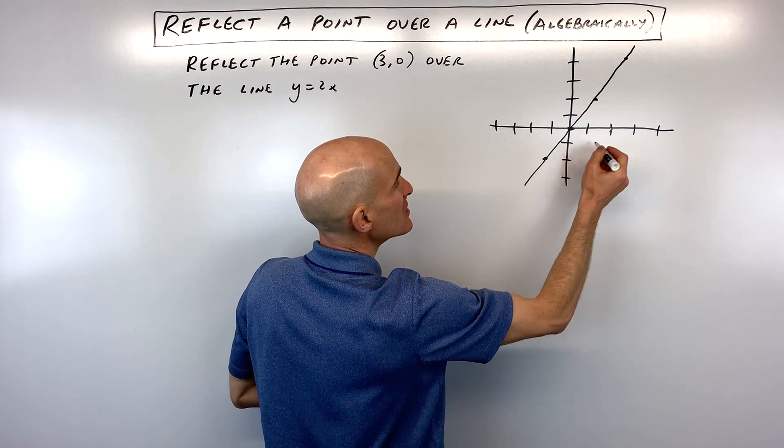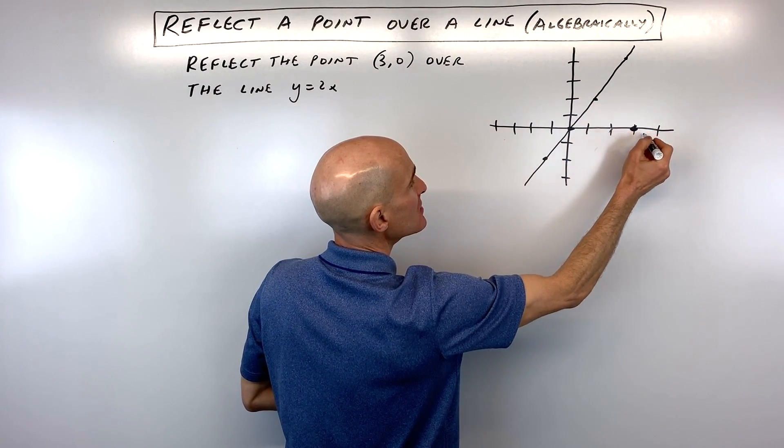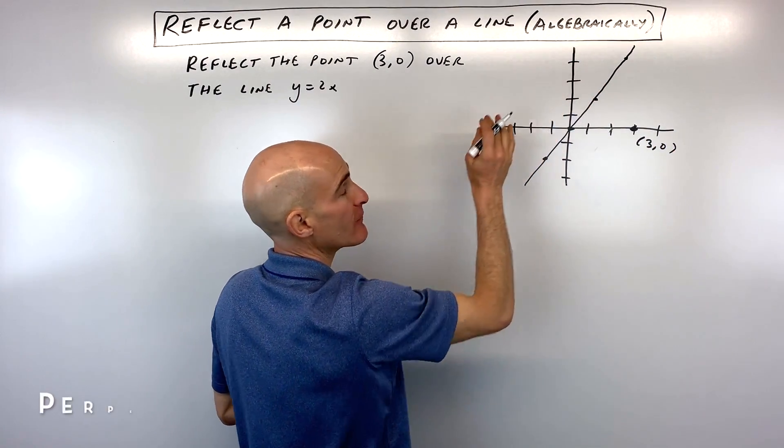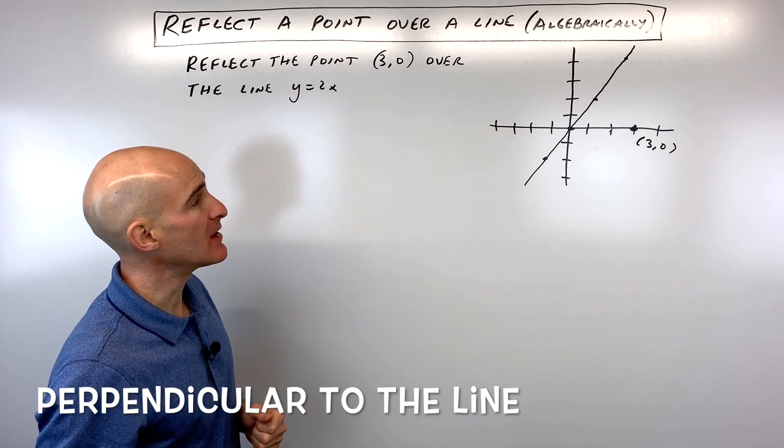Our point 3, 0 is right there, 3 comma 0. So what we want to do is we want to fold it over this line, reflect it over this line, and find the new coordinates of the image point.